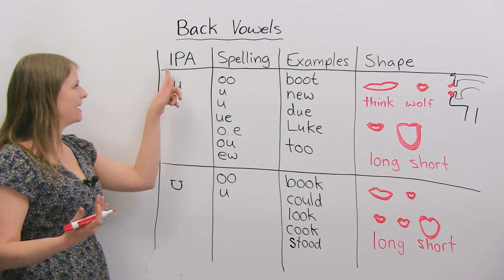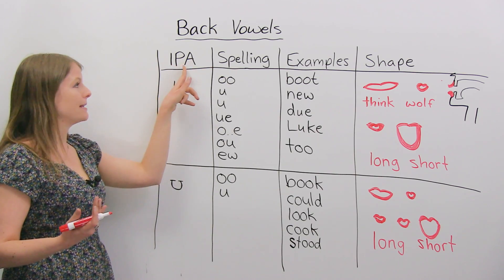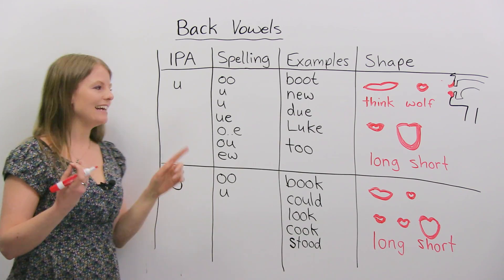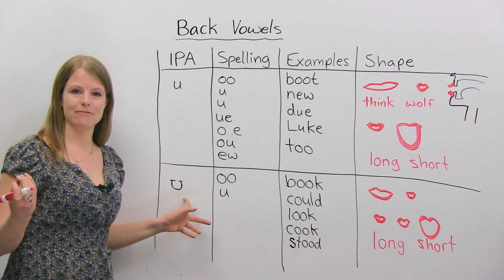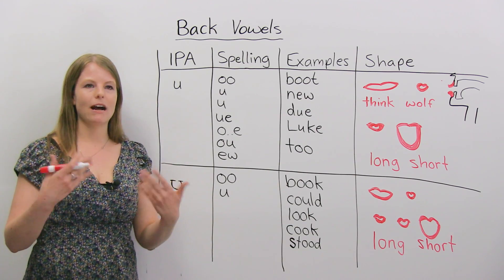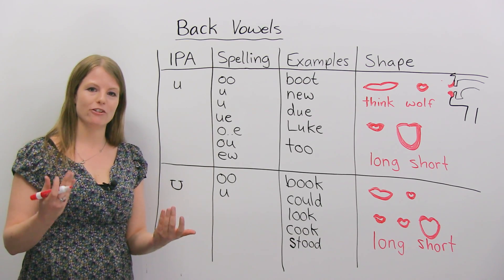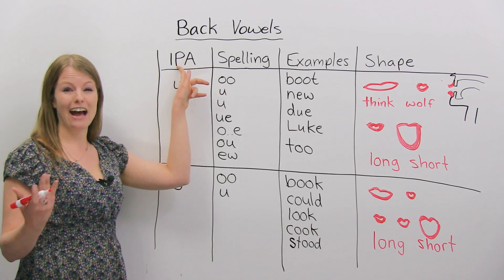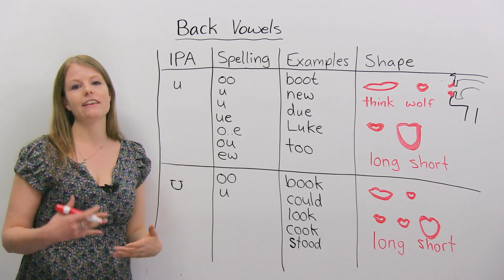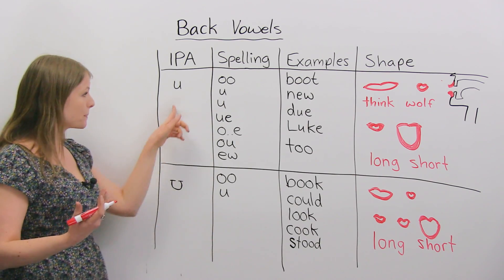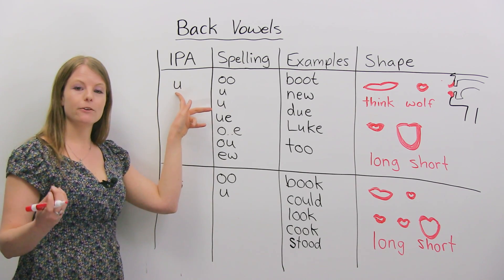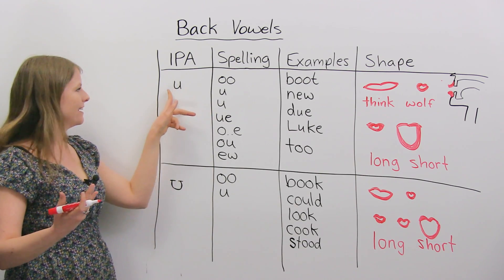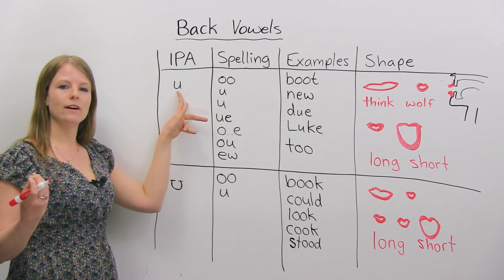One thing you can use is something called the International Phonetic Alphabet, or IPA for short. This is where you have a lot of different symbols, and each symbol is a sound. So in the dictionary, when you're looking at a word, sometimes they will have the International Phonetic Alphabet pronunciation. This is a tool that can help you with your pronunciation. This is the symbol for the "oo" sound — so if you ever look at the IPA and you see a word with this in it, it's the "oo" sound.